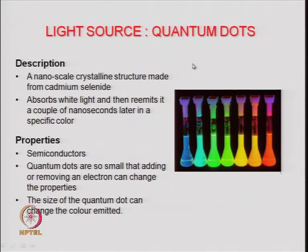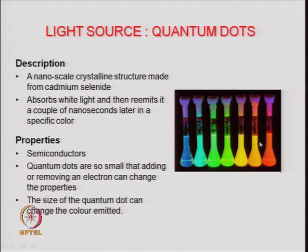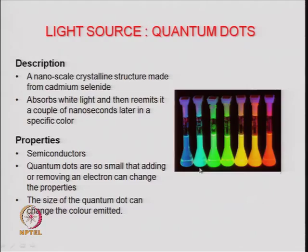Quantum dots are normally shown in this colored view graph where you have solutions of the same material — cadmium selenide — but showing different colors. The particles have the same chemical composition but different colors because the size of the particles differs between solutions. All are crystalline cadmium selenide in the nano region, but some are 5 nanometers, some are 10 nanometers, and with change in size they give different colors. They can therefore be used as light sources of different wavelengths.